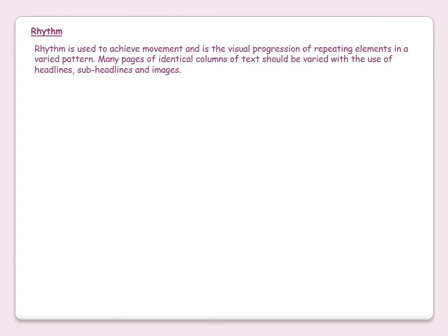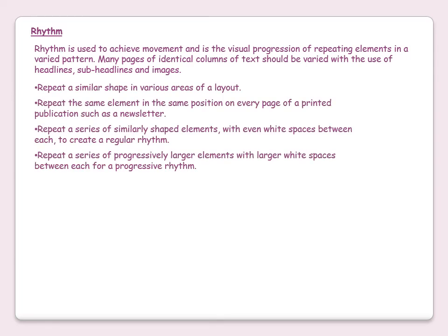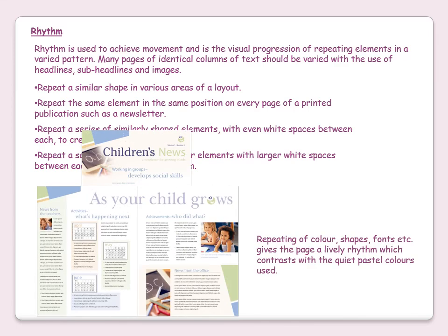Rhythm is used to achieve movement and is the visual progression of repeating elements in a varied pattern. Many pages of identical columns of text should be varied with the use of headlines, subheadings and images. Repeat a similar shape in various areas of a layout. Repeat the same element in the same position on every page of a printed publication such as a newsletter. Repeat a series of similar shaped elements with even white spaces between each to create a regular rhythm. Repeat a series of progressively larger elements with larger white spaces between each for a progressive rhythm. Repeating colours, shapes and fonts gives the page a lively rhythm.